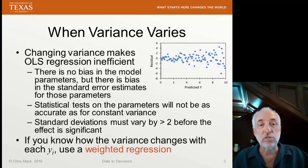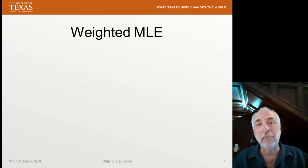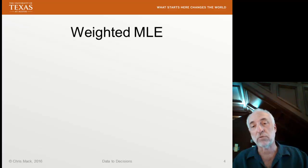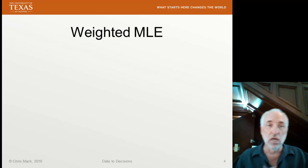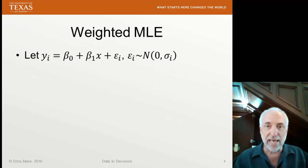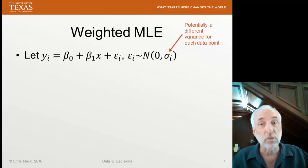One thing we can do is use a weighted regression, and that's what we're going to talk about now. Let's talk about weighted maximum likelihood estimators. MLE was our approach in OLS regression — if we had a normal distribution, the maximum likelihood estimator turned out to be the same as the least squares estimator. We're going to do the same thing here, but now our residuals, which we'll still assume are normally distributed, could have a different variance — a different standard deviation — for each data point.